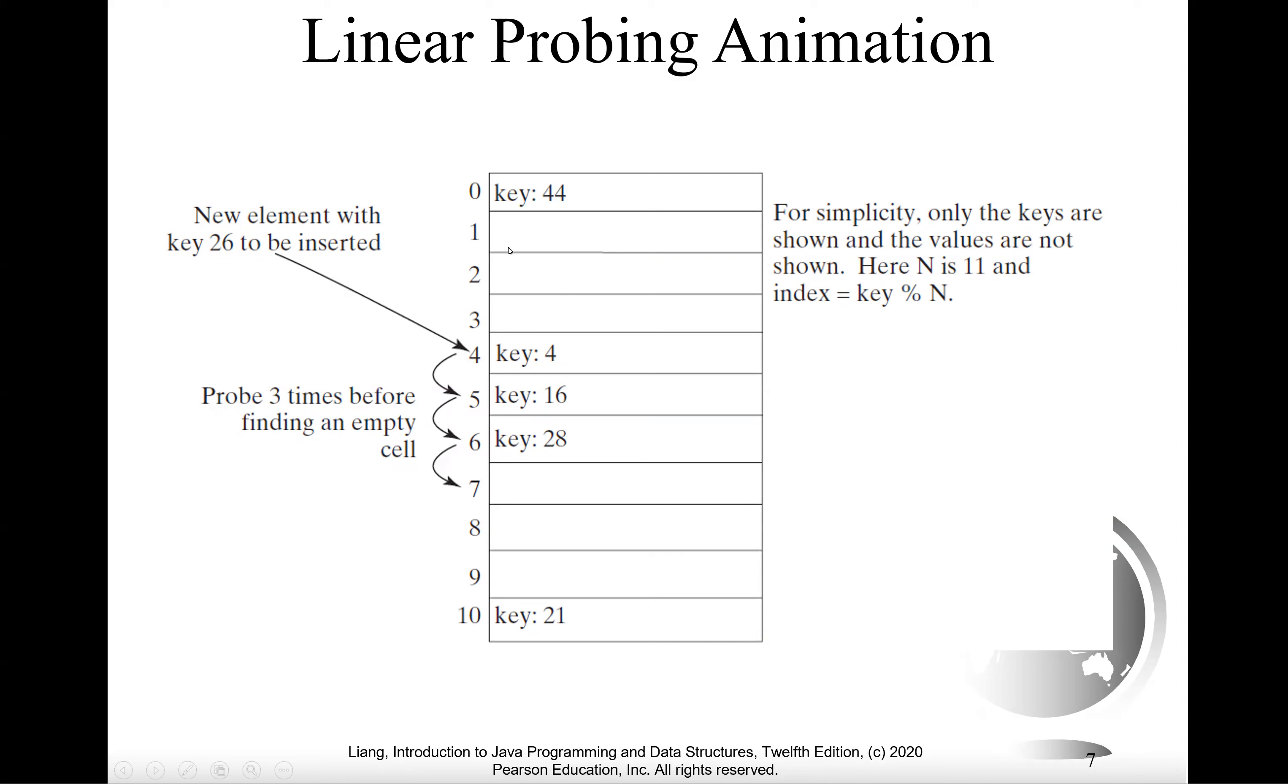Let's look at this example. Suppose we have the table size is 11, so the index is from 0 to 10. For simplicity, let's use the integer as the key and the table size is 11. The key is compressed into the index: key 44 is now at 0, 4 is at 4, 16 is at 5, and 28 is at 6.